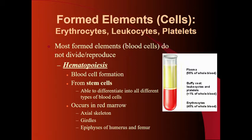These formed elements, or in general the blood cells, do not divide or reproduce. Instead, blood cells are formed through a process called hematopoiesis. This is when stem cells in the red bone marrow are able to differentiate into all the different types of blood cells. This occurs mainly where we have lots of red marrow — in the bones of the axial skeleton, in the girdles (the shoulders and hips), and the epiphyses of large long bones such as the humerus and the femur.